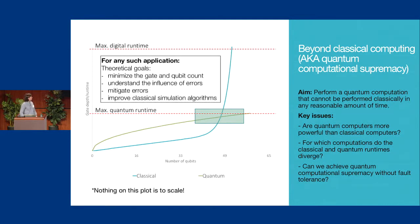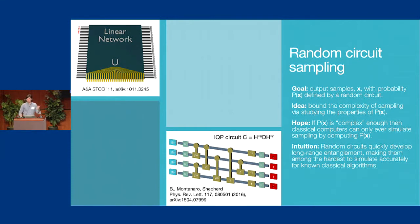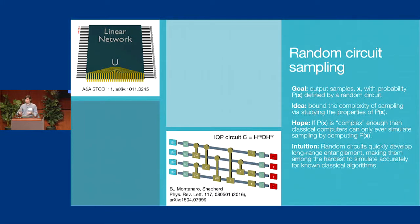Our approach is to focus on things we can actually prove rather than necessarily the most industry-relevant applications. To do that, we've been studying randomized circuits and the complexity of randomized circuits. At a very high level, the goal of this research program has been to classify the complexity of quantum circuits up to reasonable notions of error, by studying the complexity of the probability distributions describing the outputs of quantum circuits. A quantum circuit outputs bit strings of ones and zeros — it produces samples x with probability P(x) — and we study this for random circuits.